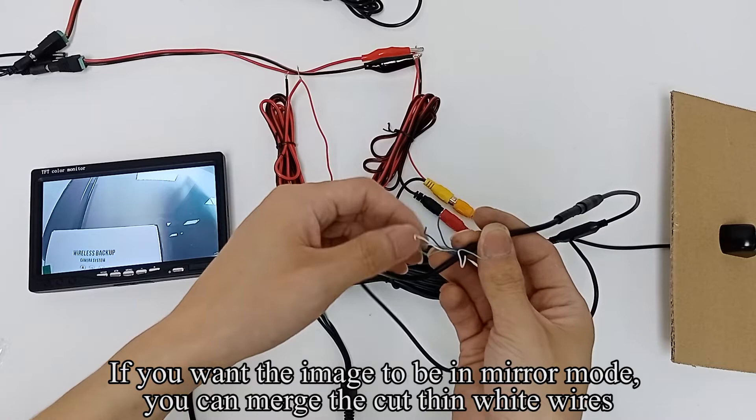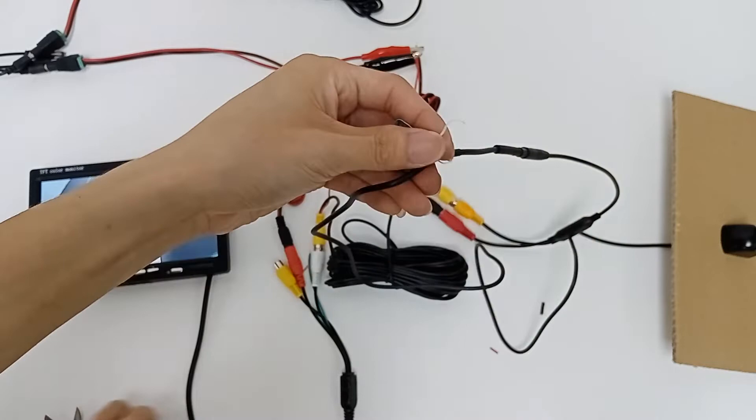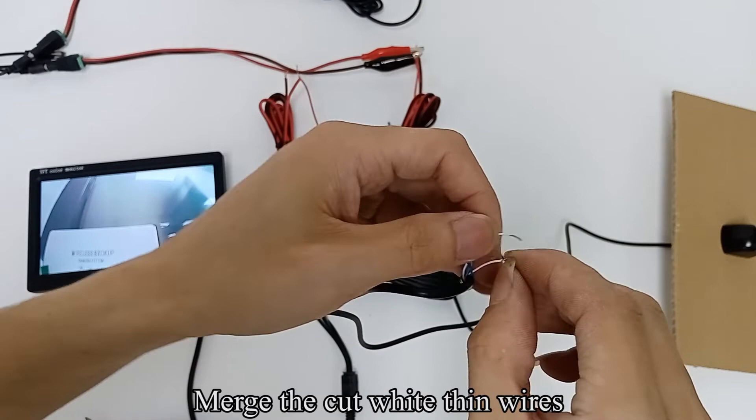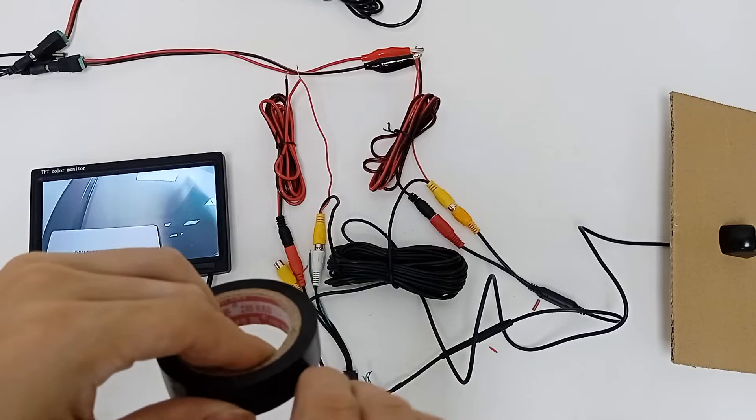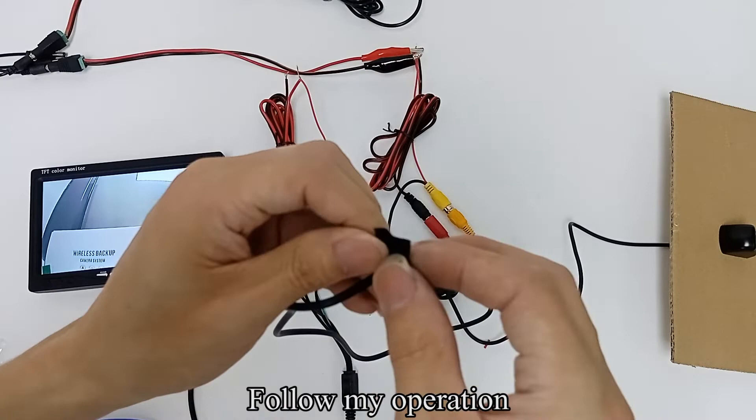If you want the image to be in mirror mode, you can merge the cut thin white wires. Use a tool to cut off the rubber outside the thin white wire. Be careful not to cut the copper wire inside. Merge the cut white thin wires. After merging, wrap the exposed copper wire tightly with insulating tape.